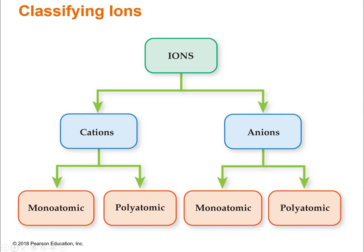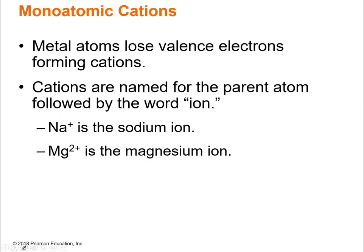This flowchart describes the types of ions you have. We've got the cations and the anions — positive and negative. Within those, you can have monoatomic, which means one atom, or polyatomic, meaning many atoms. The same is true for both cations and anions. At the end of Chapter 5, we talked about metals losing valence electrons to form positive ions. Another way to say that is that metal atoms lose valence electrons, forming cations — it's our new vocabulary word.